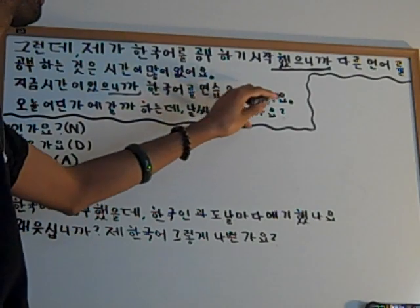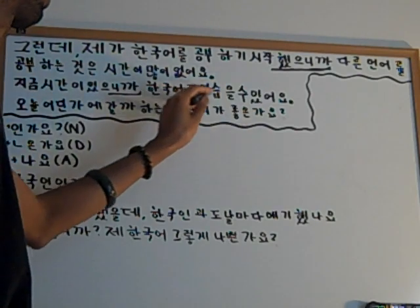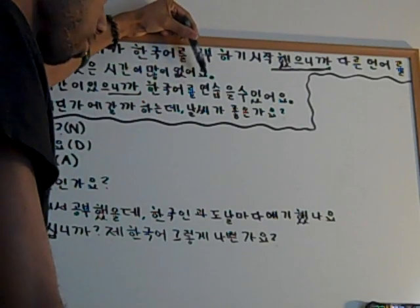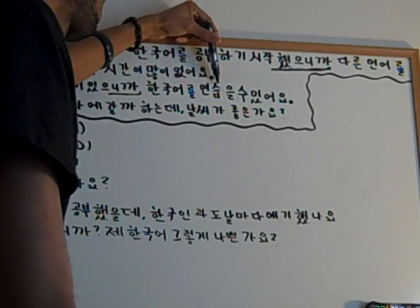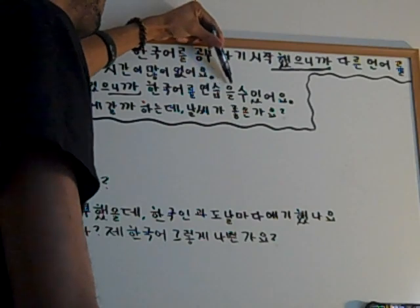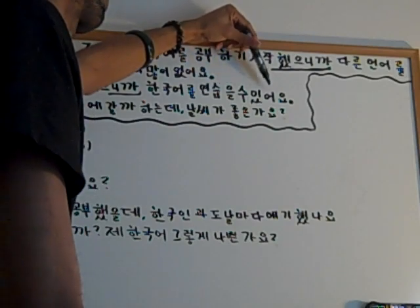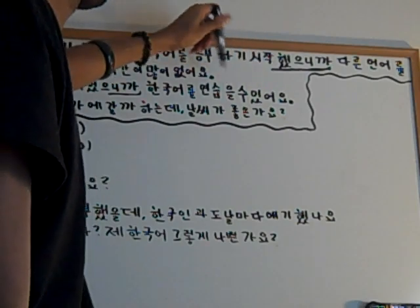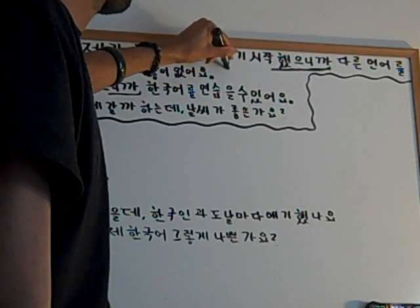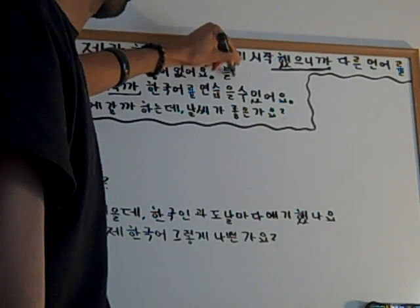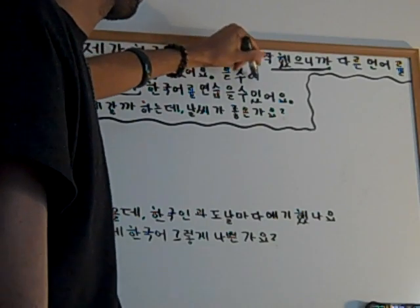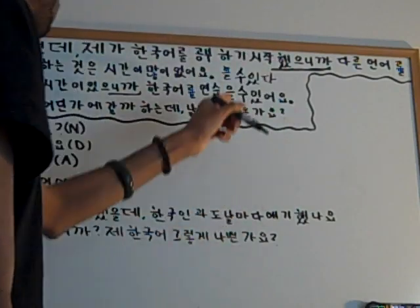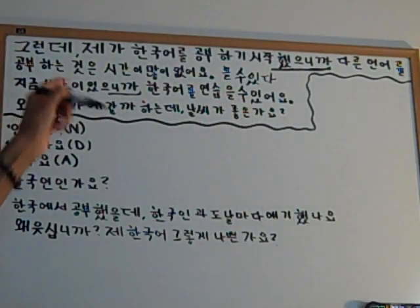한국어를 연습할 수 있어요. So 한국어 is of course Korean, 연습 is 'practice,' and 연습할 수 있어요 means 'I am able to practice,' 'I can practice.' This is a construction: verb stem plus 을/를 수 있다, meaning 'to be able to do something.' So: I am able to practice because I have the time now.